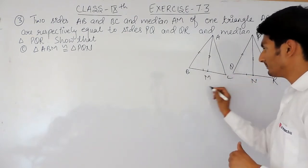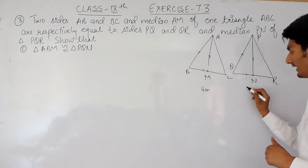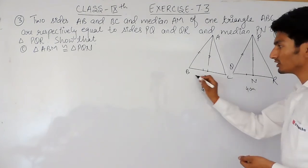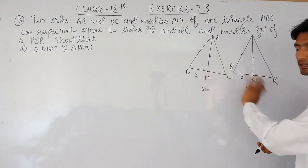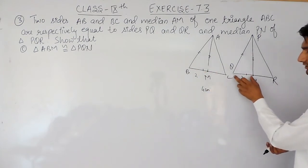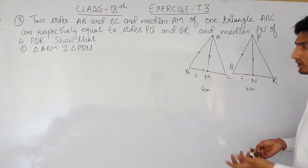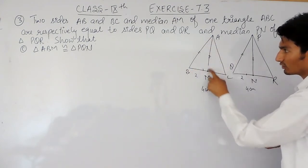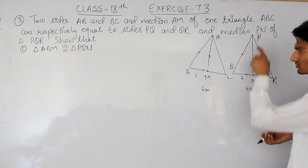For example, if the complete side is 4 cm and the other is also 4 cm, obviously half of each — which is 2 cm — must also be equal. Here this 2 cm will be BM and here this will be QN. So BM and QN will also be equal. By side-side-side congruency, because all three sides of triangle ABM are equal to all three sides of triangle PQN, these two triangles are congruent.